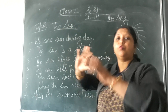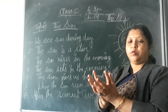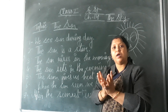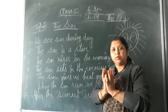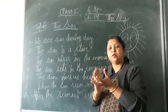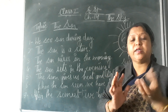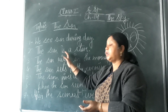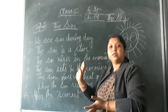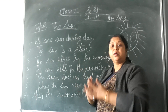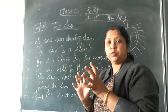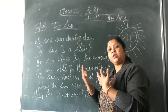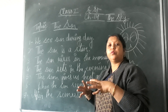The sun is a ball of fire. The sun gives us heat and light. The sun is also a star. Sun is a star. Sun is a fire — a strong fire. Sun gives us light.